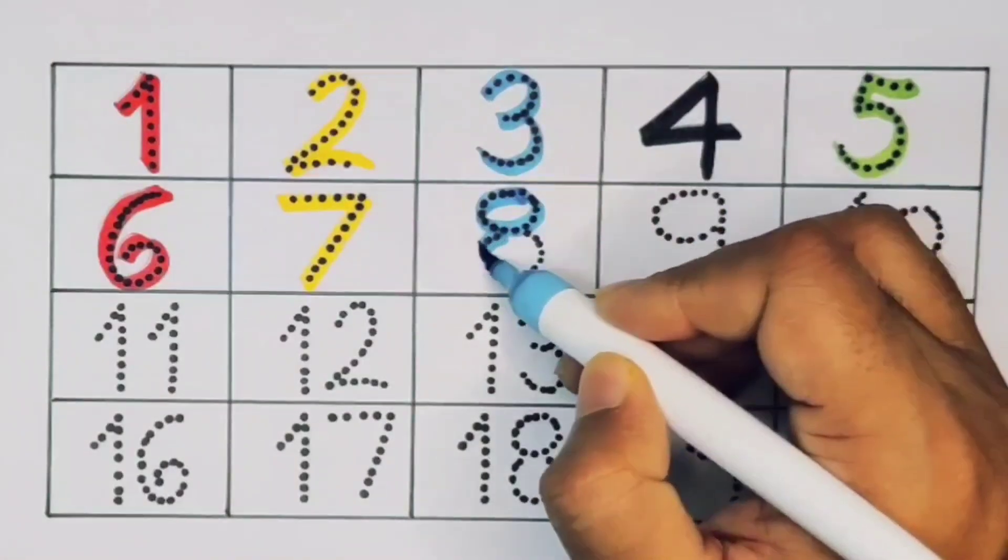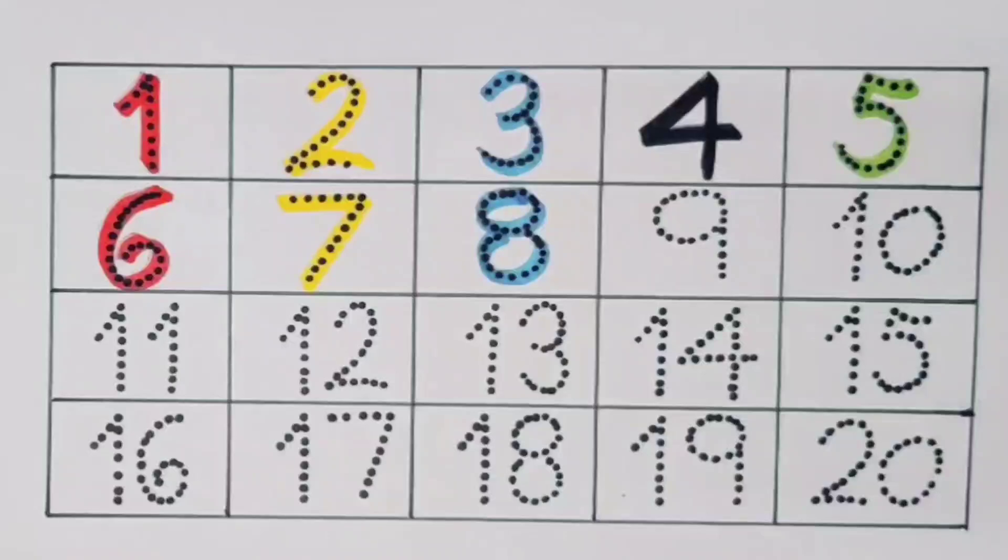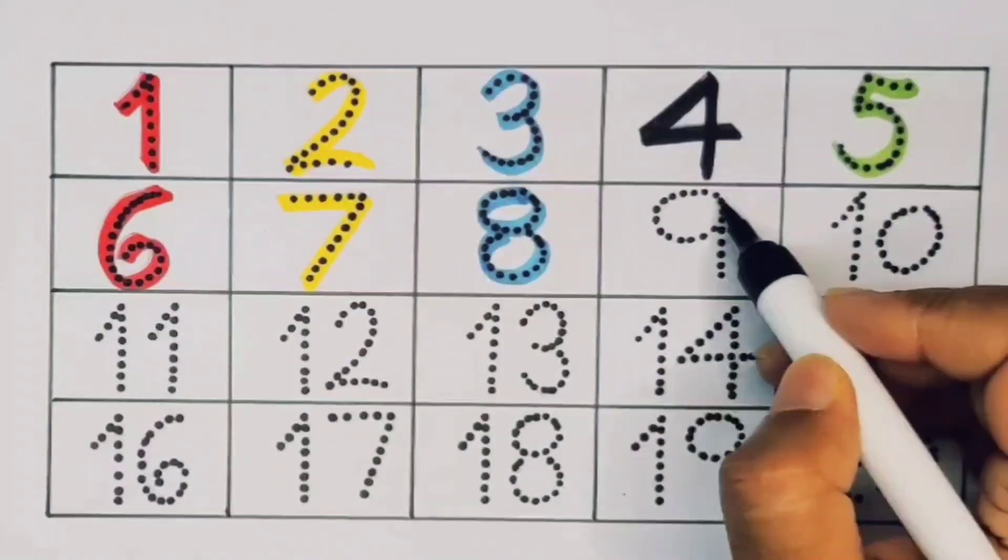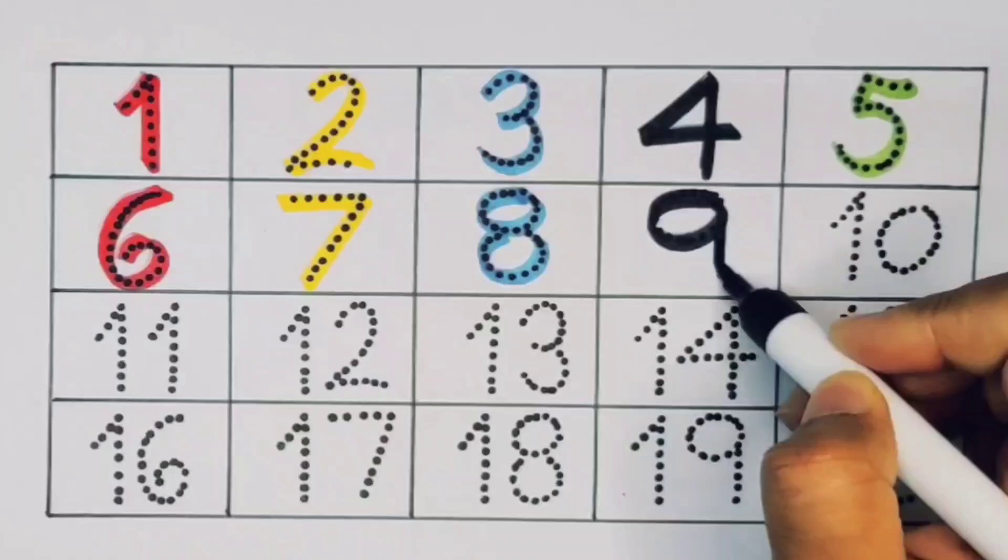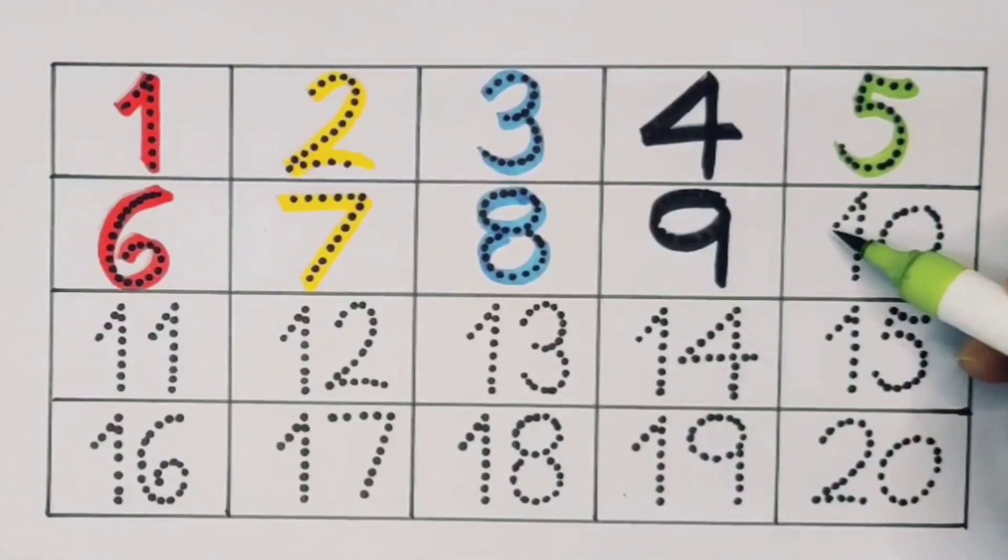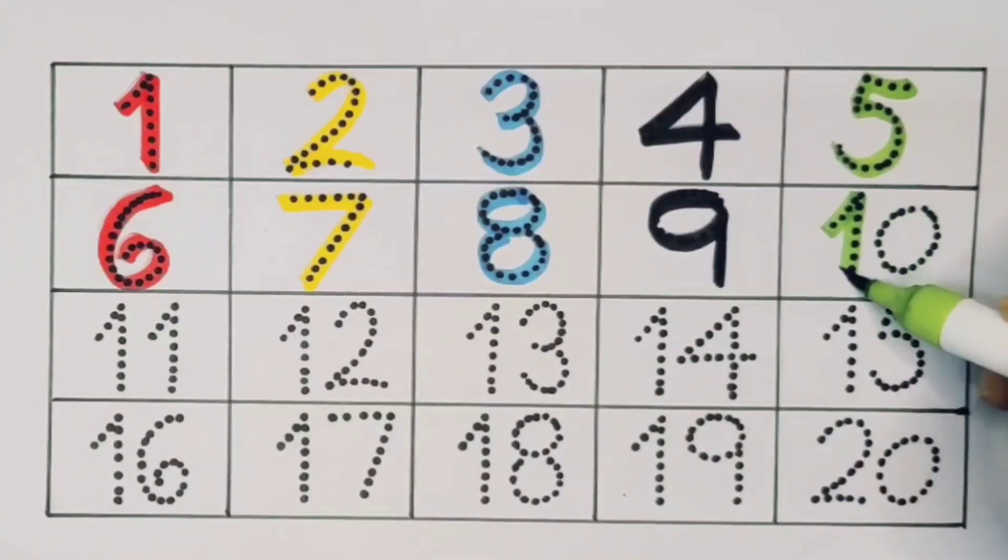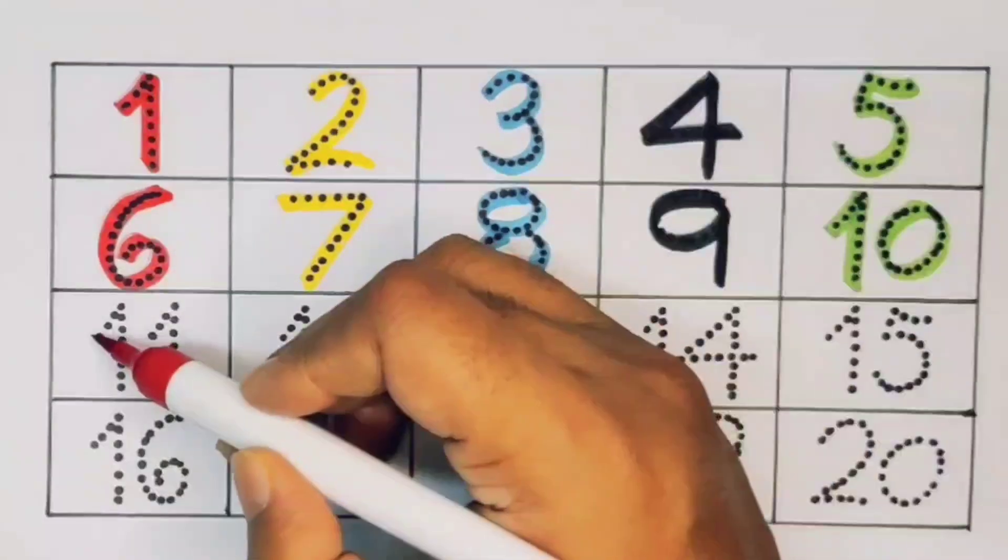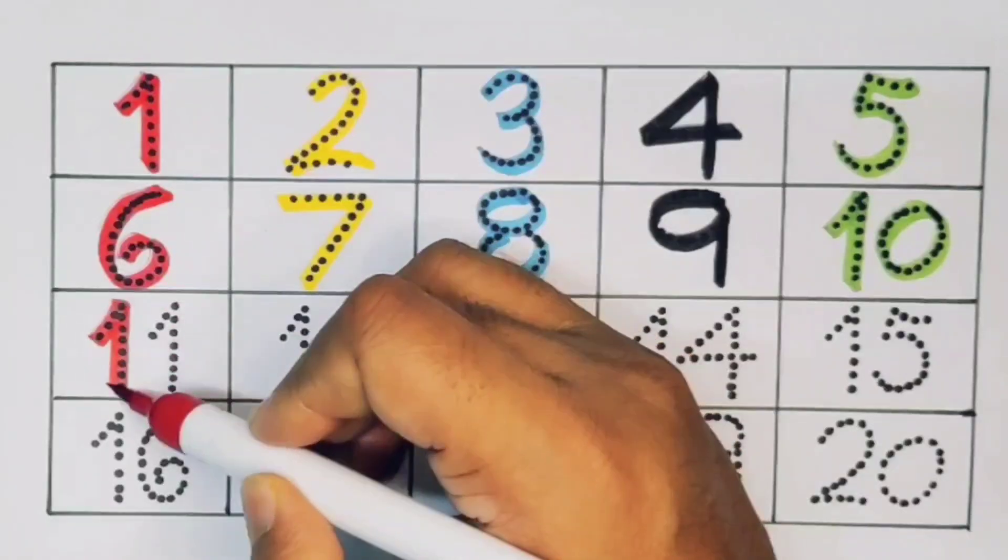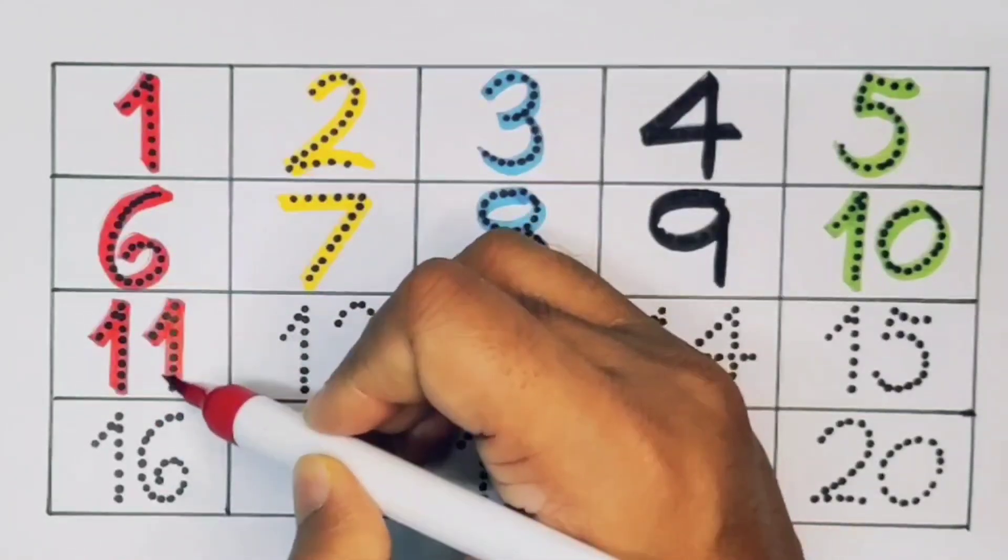Next kids, nine. Number nine. Next kids, ten. One zero, ten. Number ten. Next kids, eleven. One one, eleven. Number eleven.